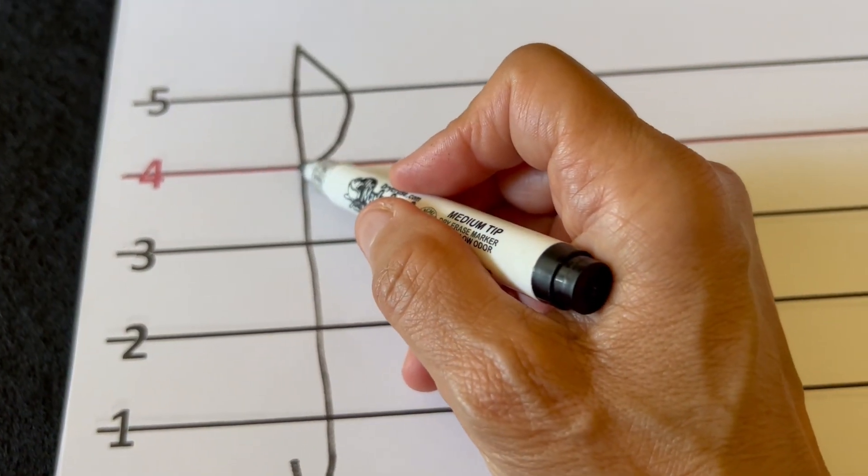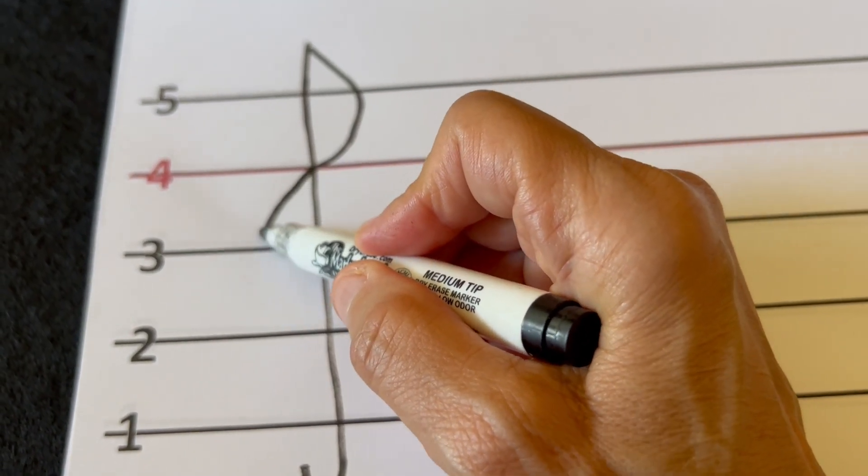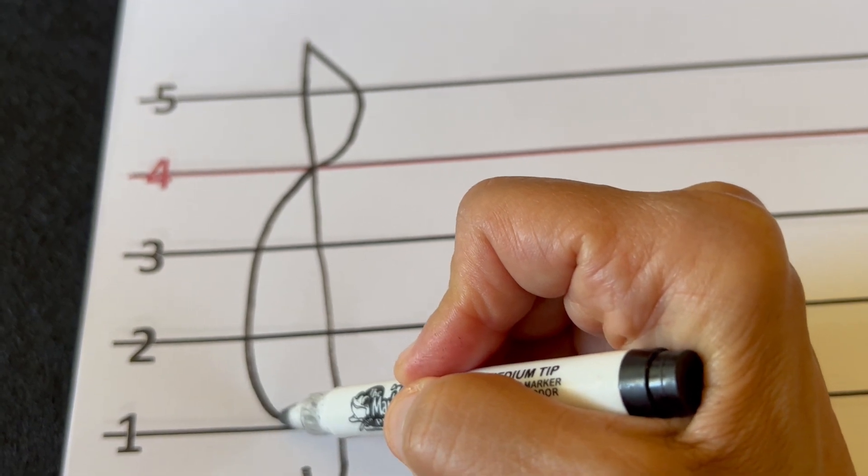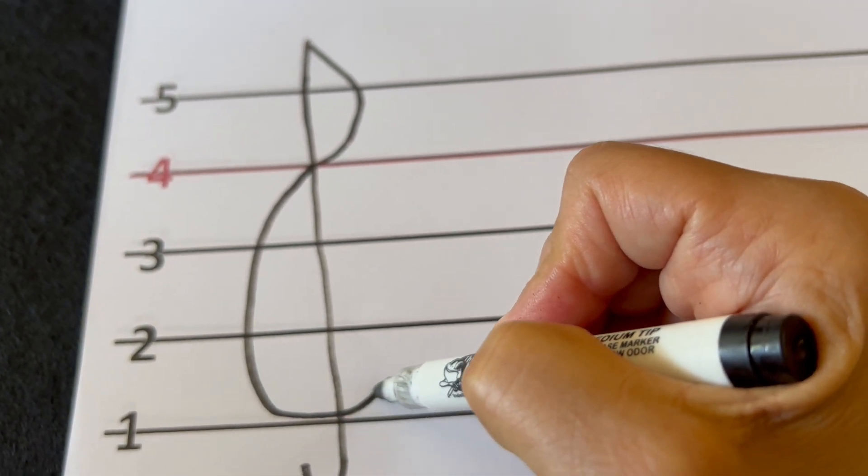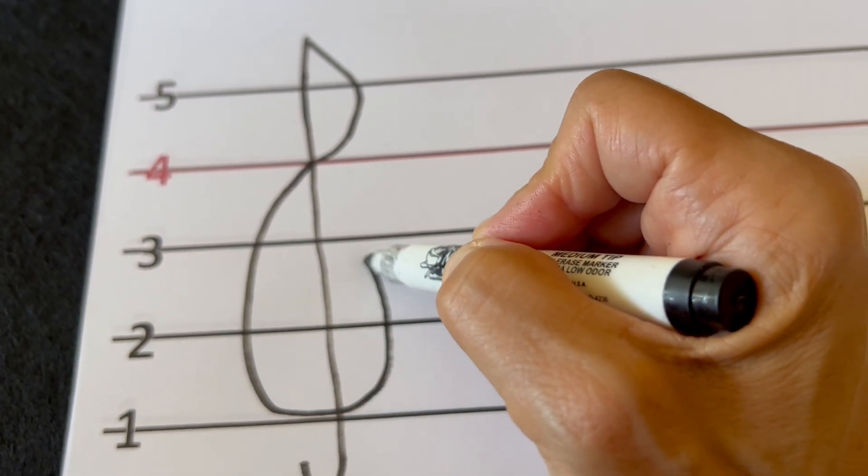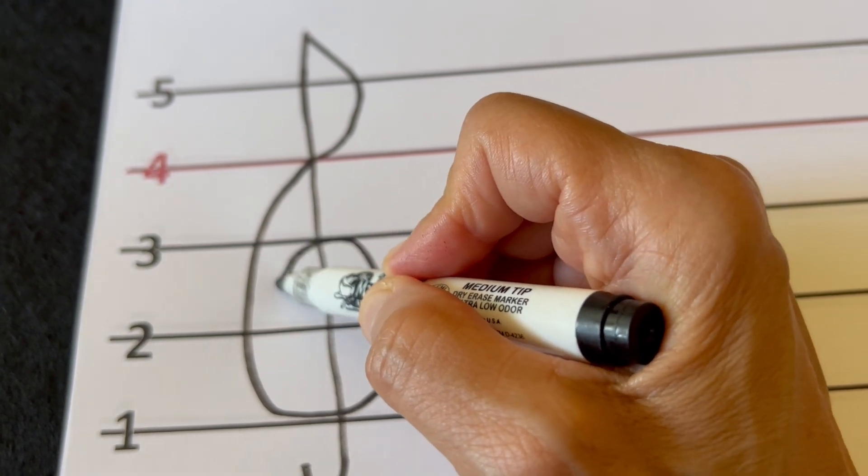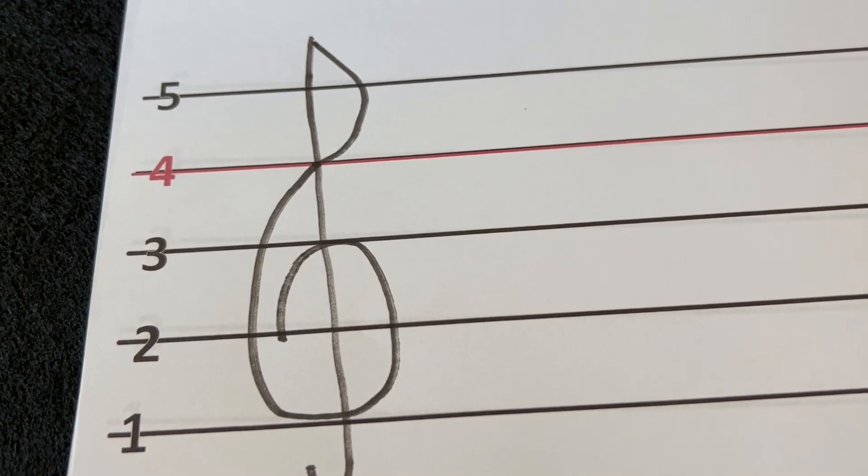Then here comes our number six. This number six is going to go all the way down to line number one and then we're going to come up to line number three and there's where we're going to stop.